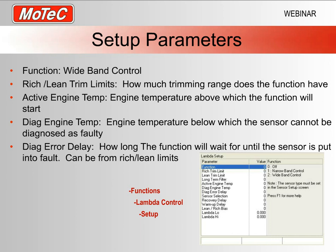At the very top is the Function parameter. If we type in 2, that tells the ECU we want to do wideband control, assuming we have set up a wideband lambda channel coming into the ECU for it to work from. The next two parameters are our rich and lean trim limits.